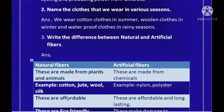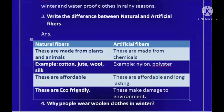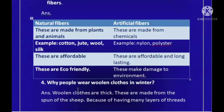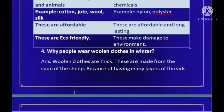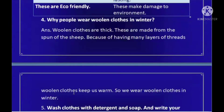Write the differences between natural and artificial fibers. Natural fibers are made from plants and animals; artificial fibers are made from chemicals. Examples of natural fibers: cotton, jute, wool, silk. Examples of artificial fibers: nylon, polyester, terrylene. Artificial fibers are affordable and long-lasting. Natural fibers are eco-friendly, while artificial fibers can damage the environment.